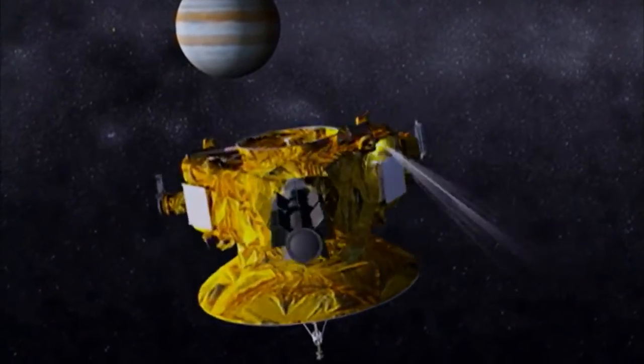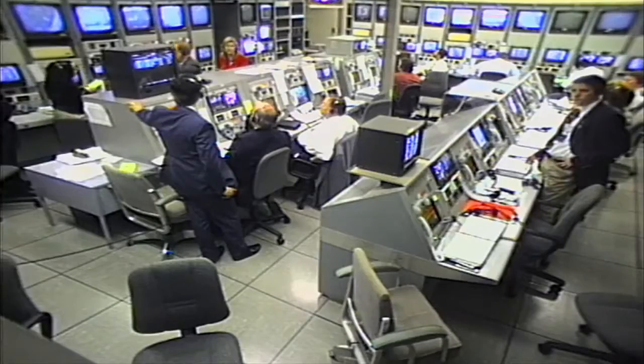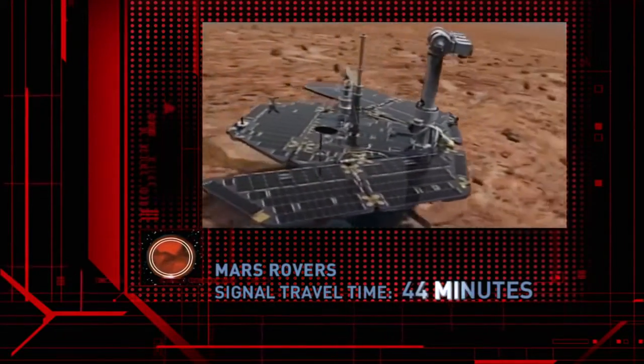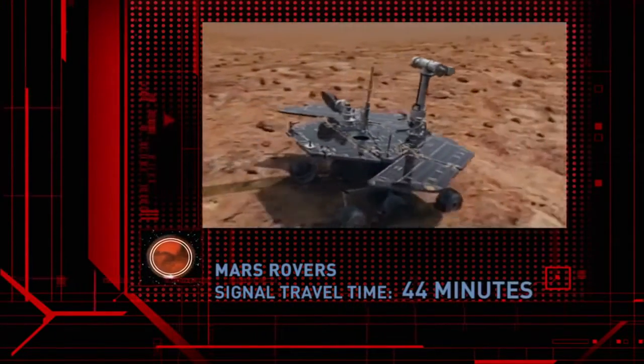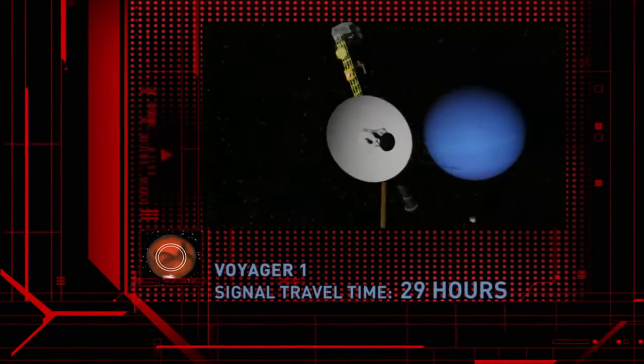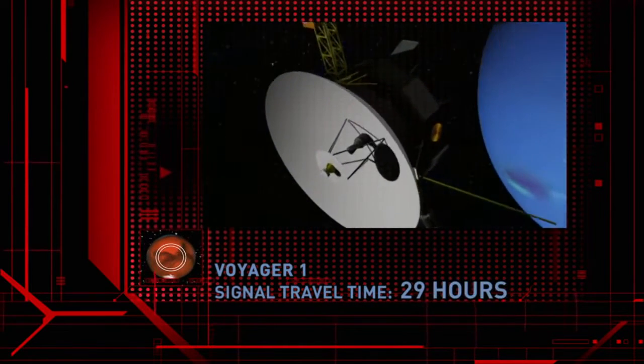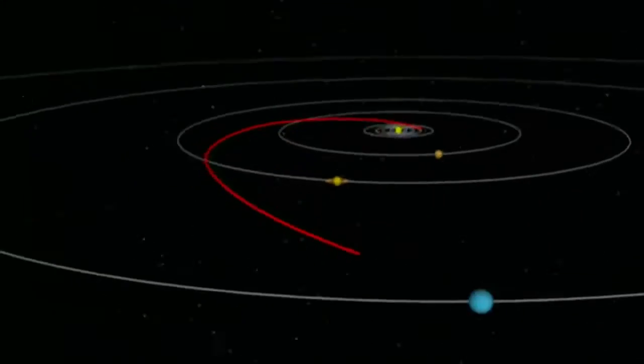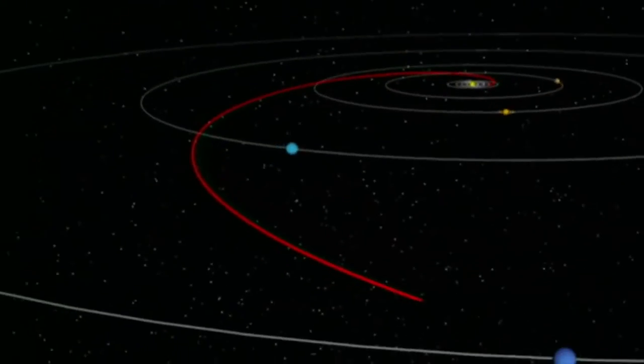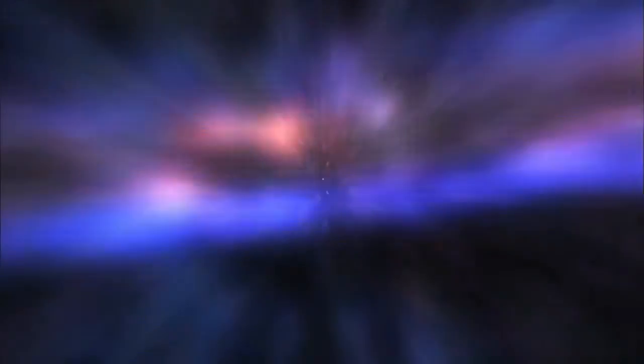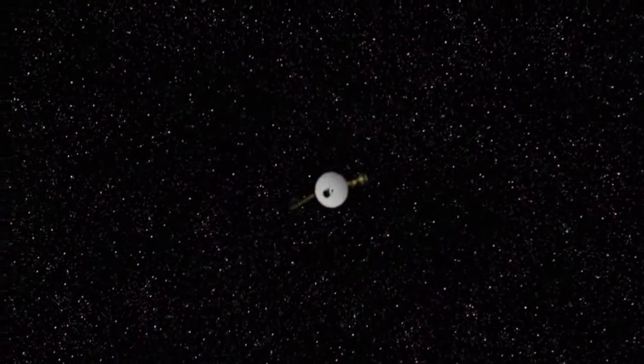The limits of light speed also make communicating with Earth's far-flung spacecraft a special challenge. It takes up to 44 minutes for signals to travel back and forth to the probes exploring Mars. More than three hours to Cassini at Saturn. And over 29 hours to Voyager 1, the most distant of all, now heading out of the solar system.